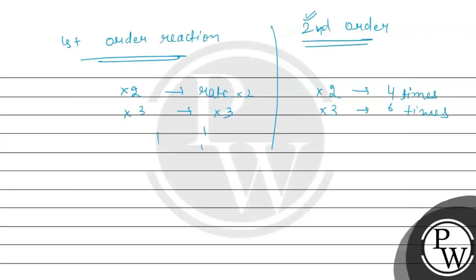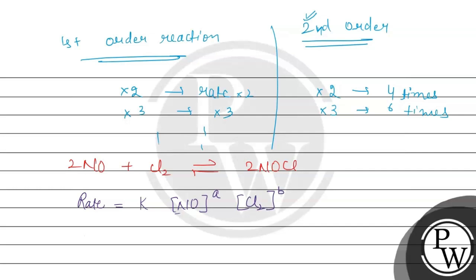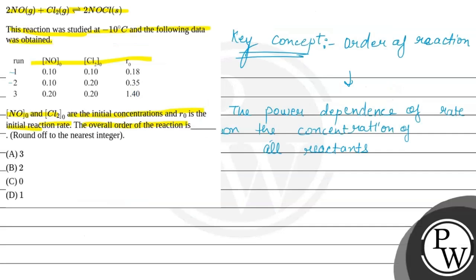We have the reaction given: 2NO plus Cl2 in equilibrium with 2NOCl. If we want to write this for the rate, that will be equal to k times [NO] raised to the power A — the order with respect to NO — times [Cl2] raised to the power B, the order with respect to Cl2. From the given table, we have the first, second and third runs.